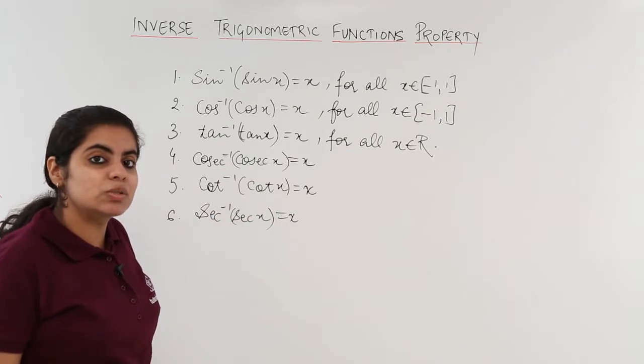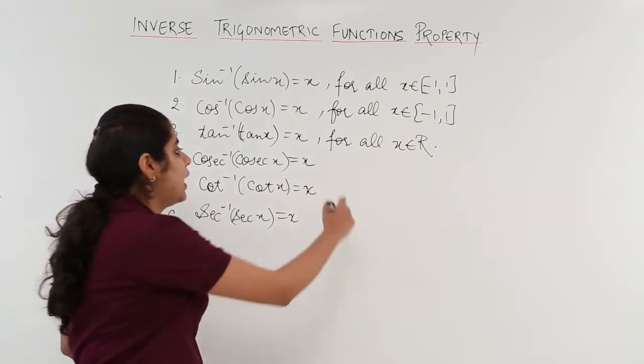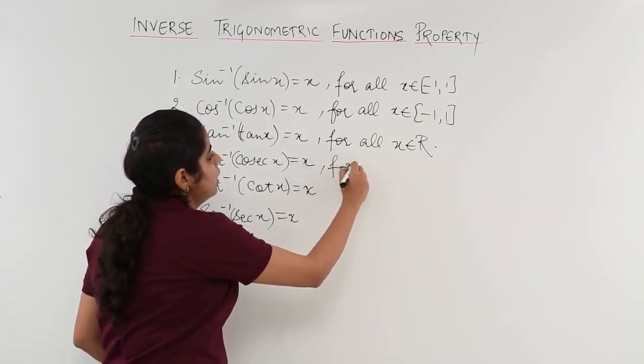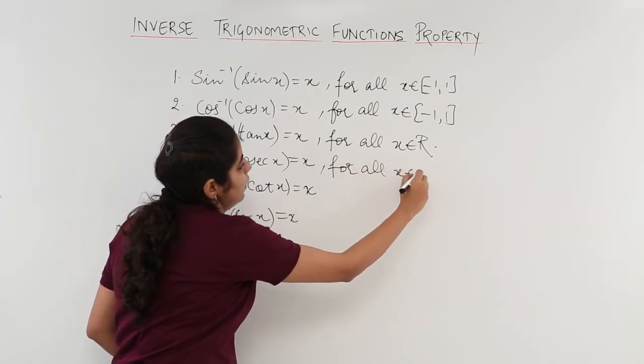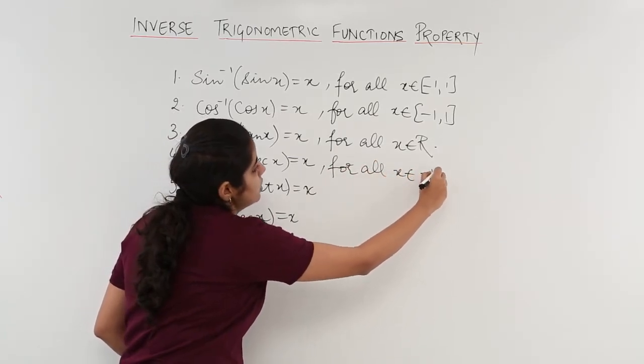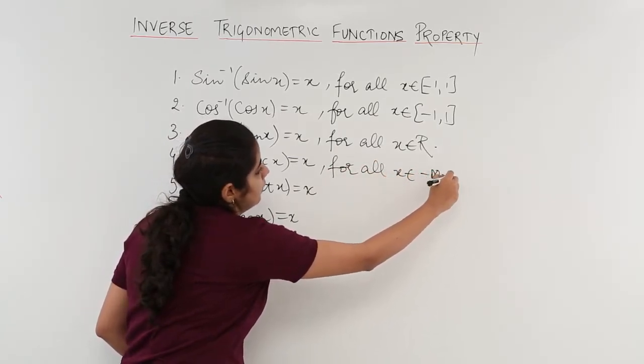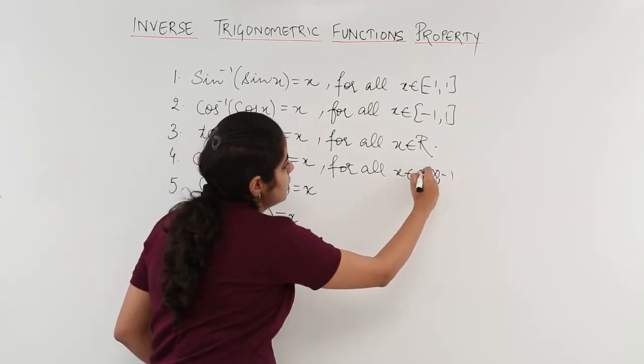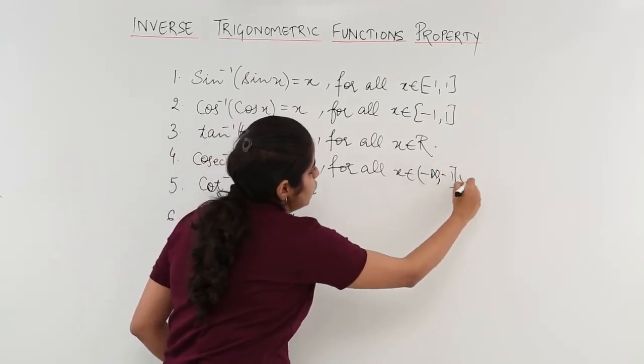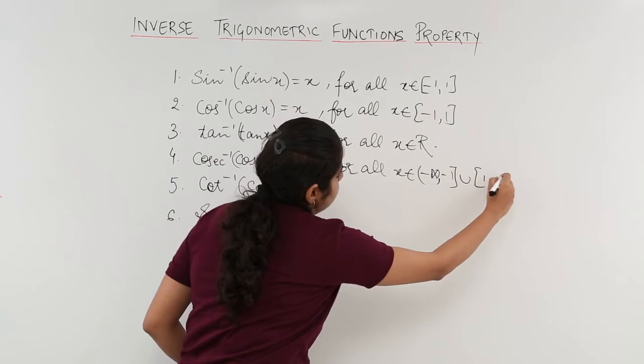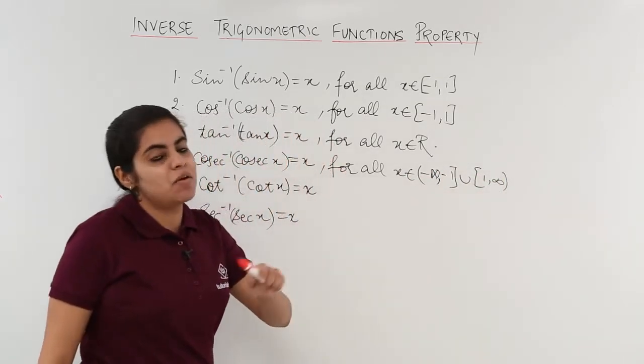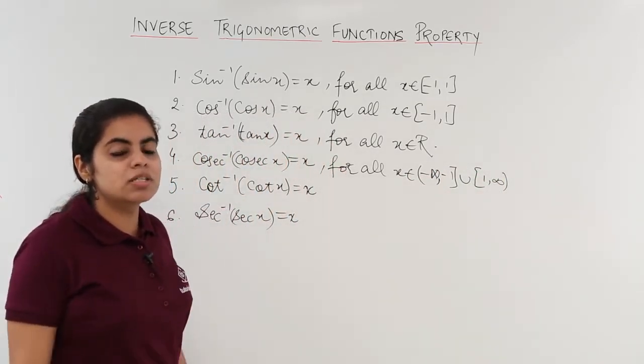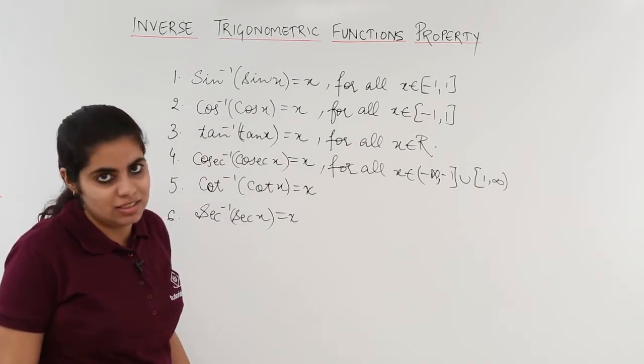What about cosecant inverse cosecant x? The value for all x belonging to minus infinity to minus 1, union 1 to infinity. If this is the case, my answer to cosecant inverse cosecant theta is simply theta.